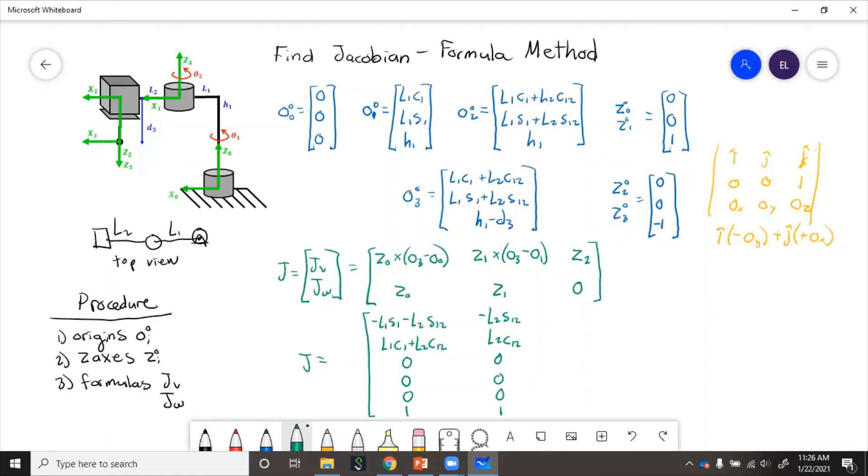And then for the third joint, we'll just have the z-axis vector. And then 0s.